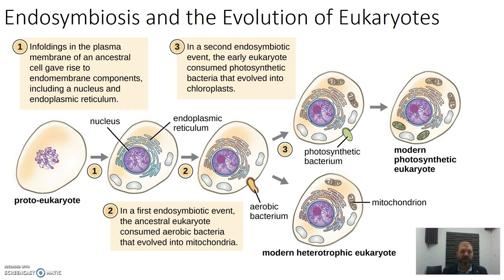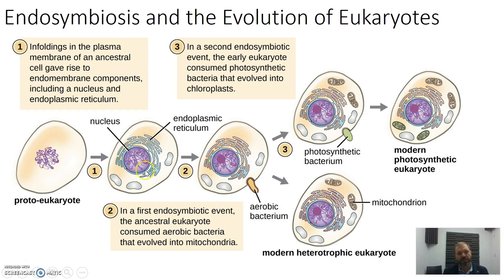Here's a diagram that summarises endosymbiosis. You have some sort of proto-eukaryote — basically like a prokaryotic cell — with a membrane, genetic material as DNA, but no nucleus and no organelles yet. How do the nucleus and organelles arise? First, if you have an infolding of the plasma membrane, you can create vesicles within the cell and also more complex structures like the nucleus and the endoplasmic reticulum. It's thought that the double membrane around the nucleus actually came from an infolding of the plasma membrane — the first step towards being eukaryotic.